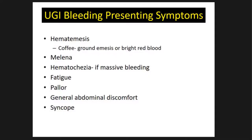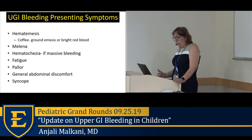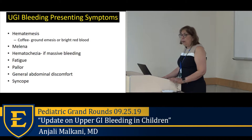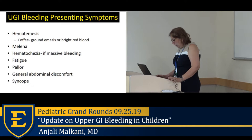Children with upper GI bleeding can present with hematemesis — either coffee grounds or bright red blood. They may present with melena or hematochezia, which if from above usually signifies a massive upper GI bleed. Sometimes there's no visible blood; it's all internal in the gut lumen. The child may present with fatigue, pallor, passing out on the way to the bathroom, or vague upper abdominal pain.